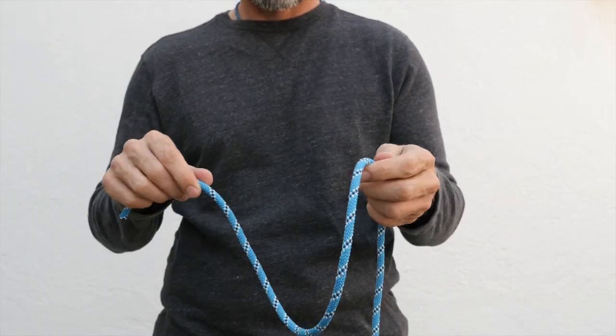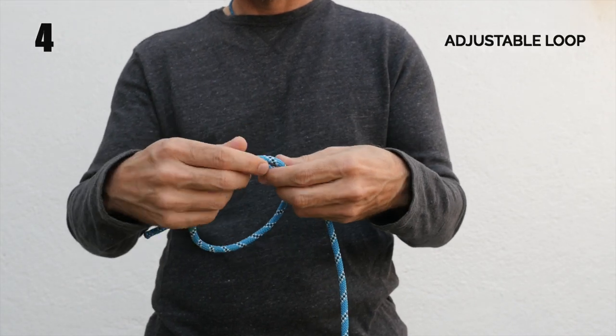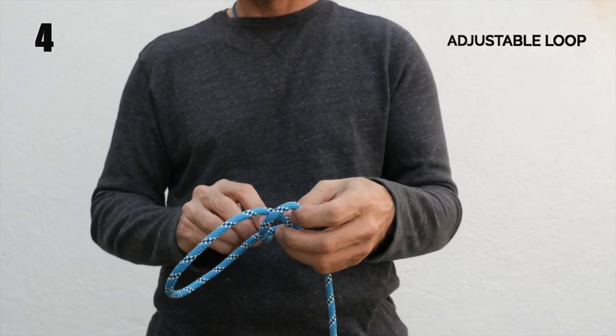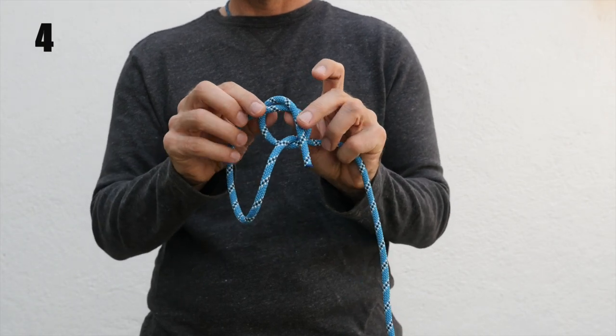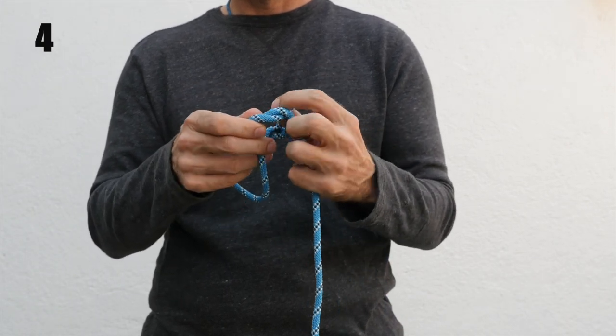The other way of tying an adjustable loop is if we tie our overhand knot around the standing part of the rope. This makes another slip knot, but this time it's called a noose.